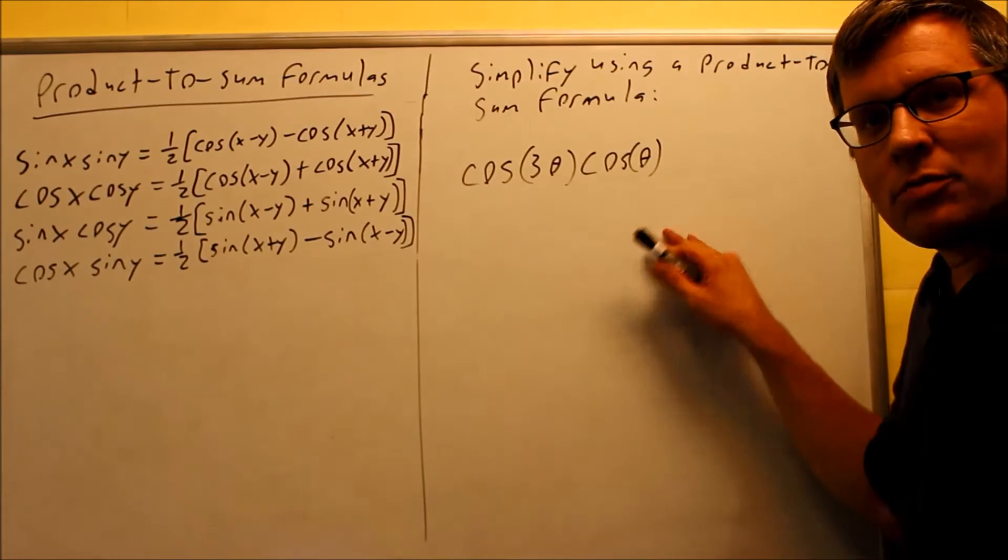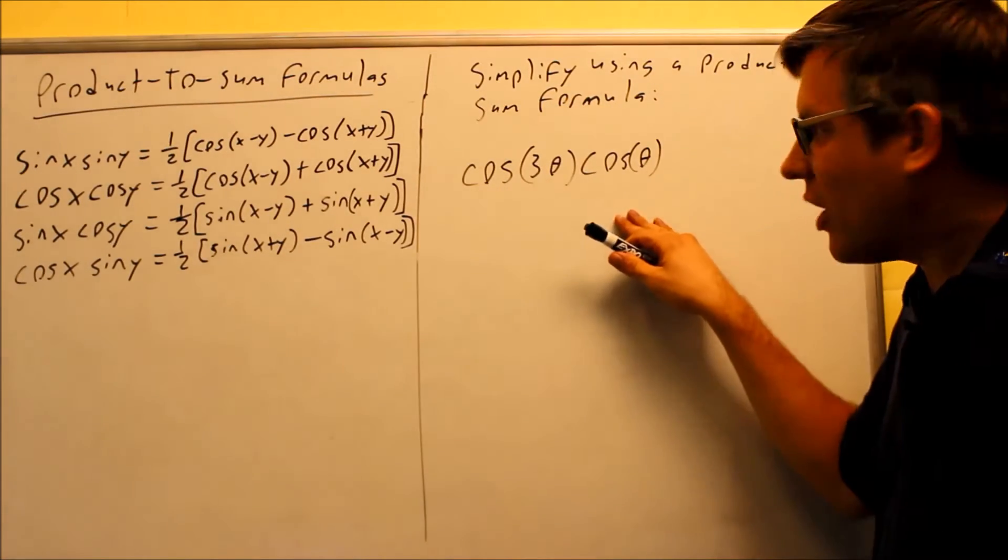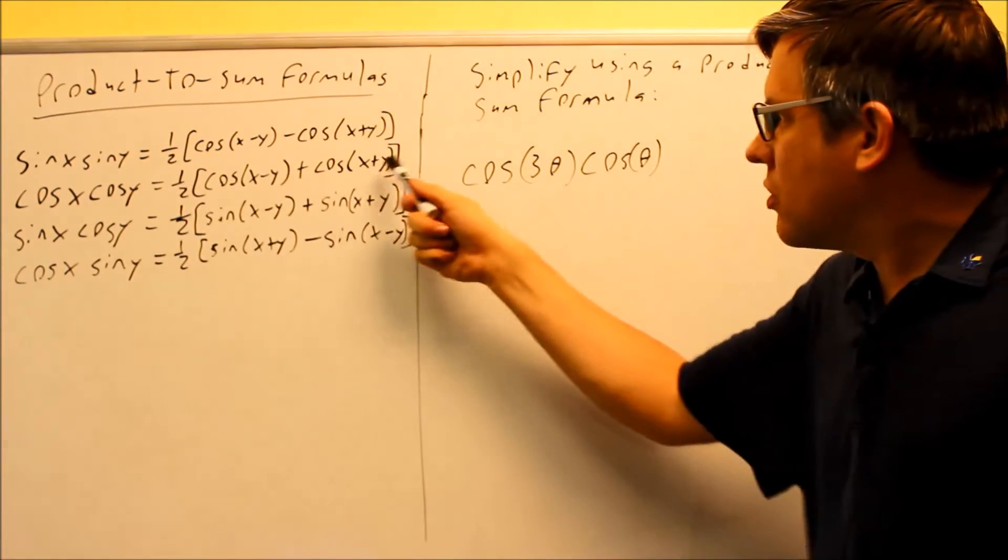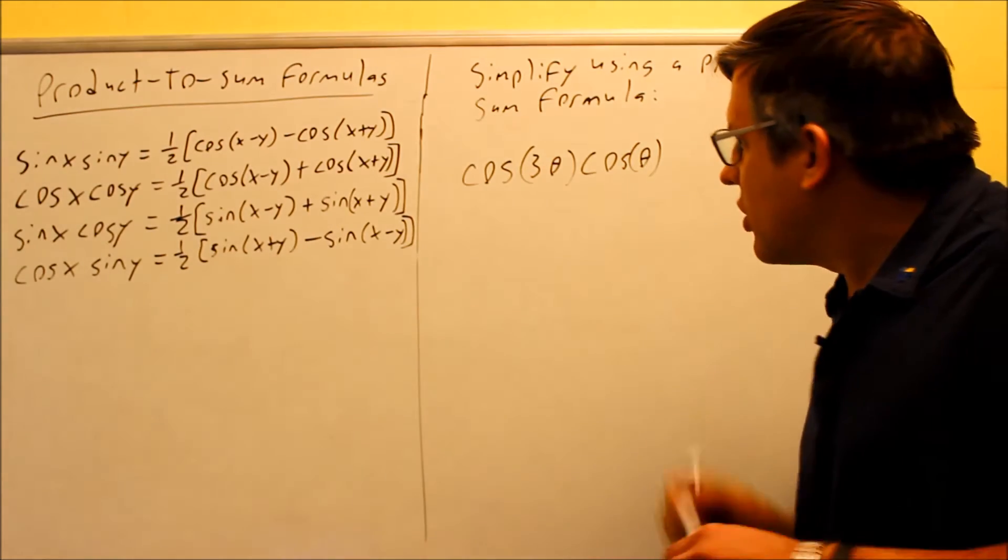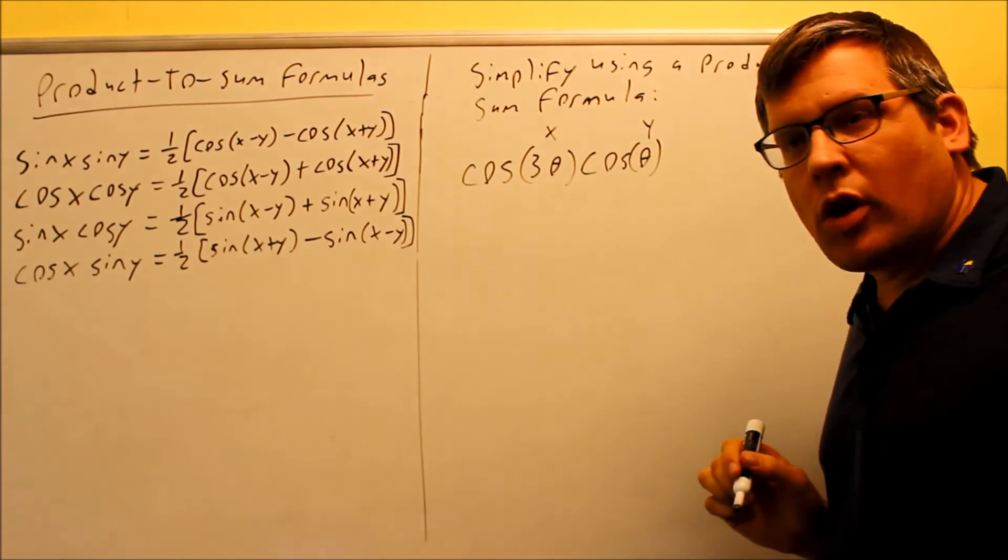Okay. Next example. Doing the same thing, we want to use the product of sum formula to simplify this. Cosine 3 theta, cosine theta. Okay. There's cosine, cosine. Now, we have to use the second formula. Once again, 3 theta is x and theta is going to be y.